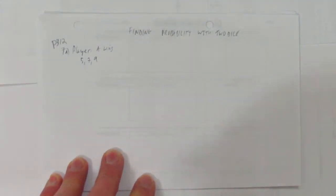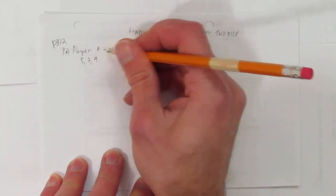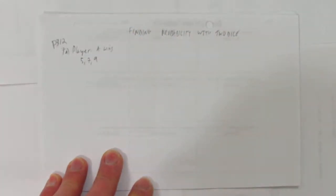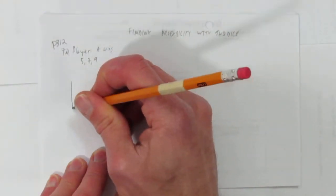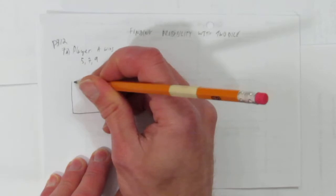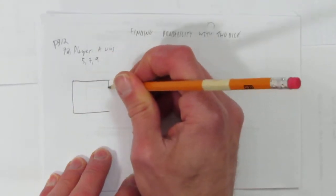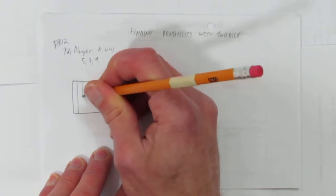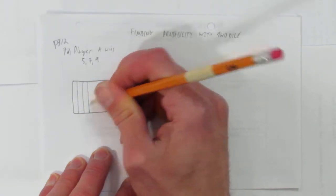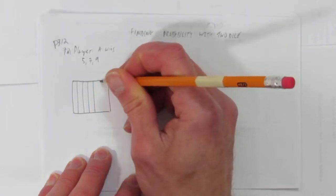So who has the advantage? Player A wins on a 5, 7, 9. Okay, first we need to figure out how many ways there are to roll 5 or 7 or 9 on two dice. So we can construct some sort of table and just look at the different possibilities we have of rolling a 5, a 7, or a 9.